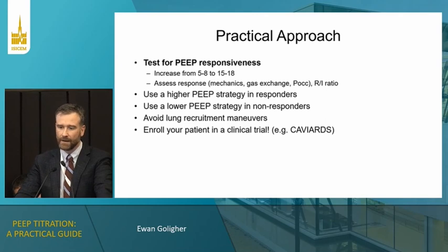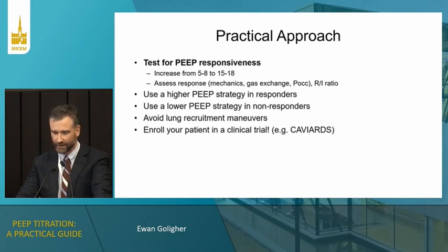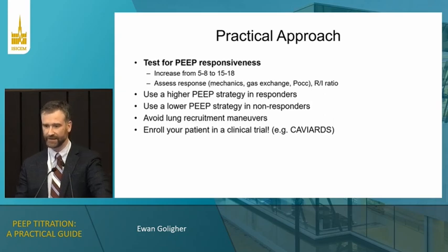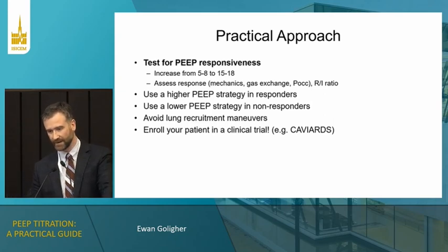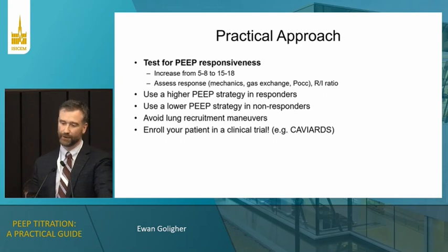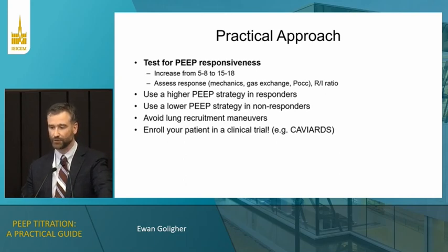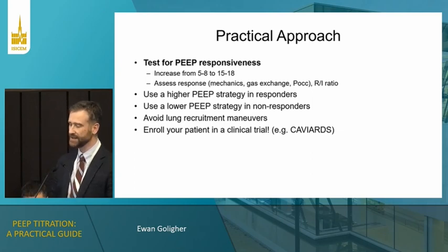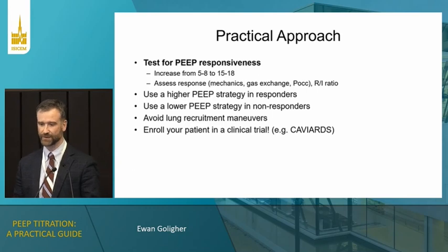To wrap up, here is my practical approach. The first thing to do is test for PEEP responsiveness: apply a test dose of PEEP, increasing from a lower to a higher level — ideally the increase will be at least 8–10 cm H₂O. I want to know: are mechanics improving? Is oxygenation improving? I can measure respiratory effort with a P0.1 maneuver and also measure the recruitment-to-inflation ratio by decreasing PEEP. In responders, the evidence supports a higher PEEP strategy; it's probably safer to use lower PEEP in patients who are not responders.